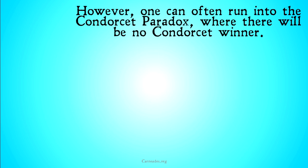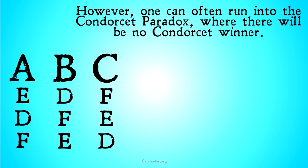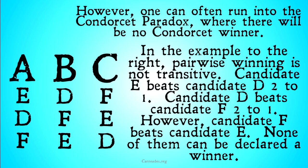However, one can often run into something known as the Condorcet paradox, where there will be no Condorcet winner. In this example, pairwise winning is not transitive. Candidate E beats Candidate D 2-1, and Candidate D beats Candidate F 2-1. If it were transitive, it would seem that because E can beat D and D can beat F, then E can beat F as well. However, Candidate F in fact beats Candidate E 2-1, so none of them can be declared the winner.